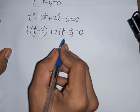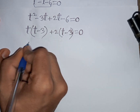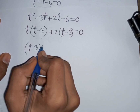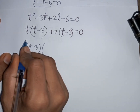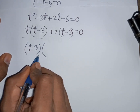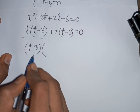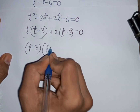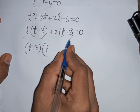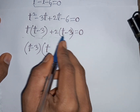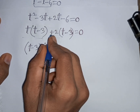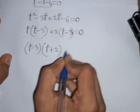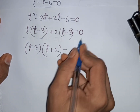Now we see t minus 3 is common in both groups, so we take out the common factor t minus 3. Bracket t minus 3 is factored out, and the remaining terms t and plus 2 are collected, giving t minus 3 bracket t plus 2 is equal to 0.